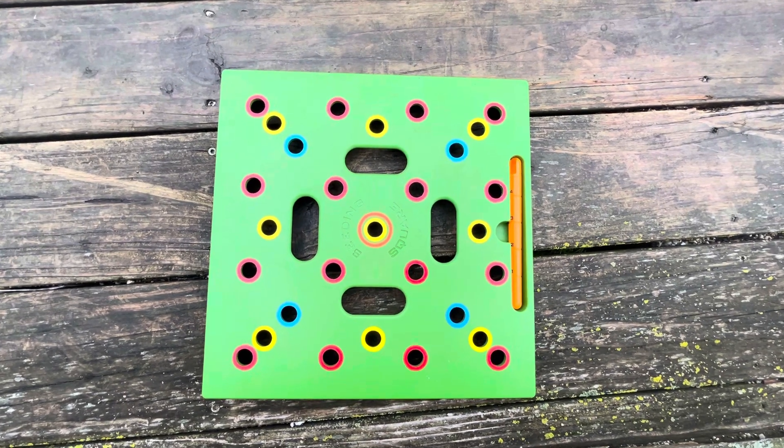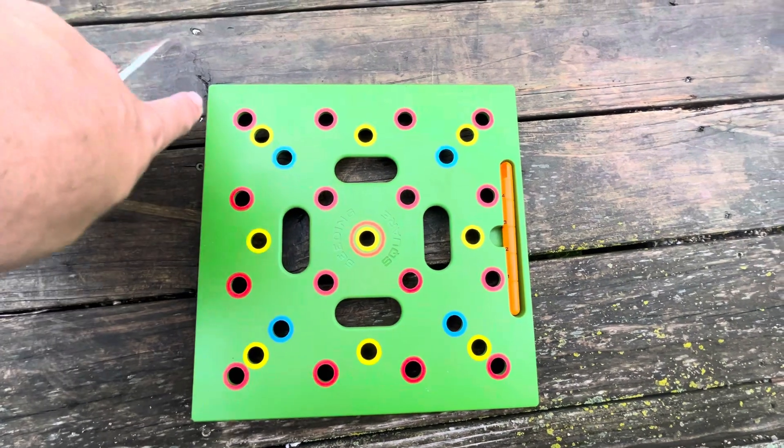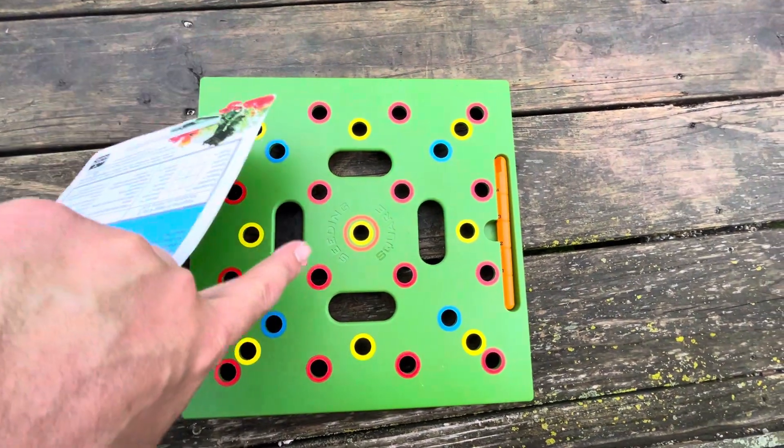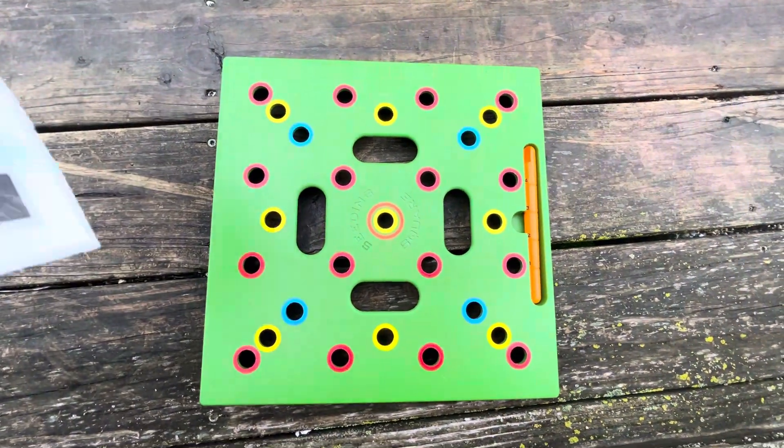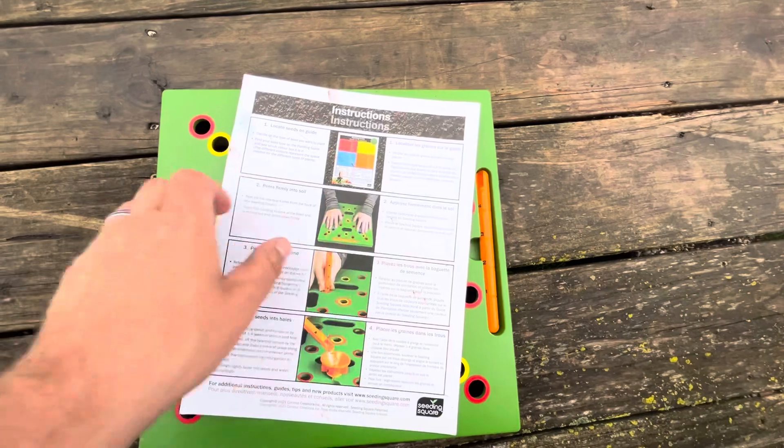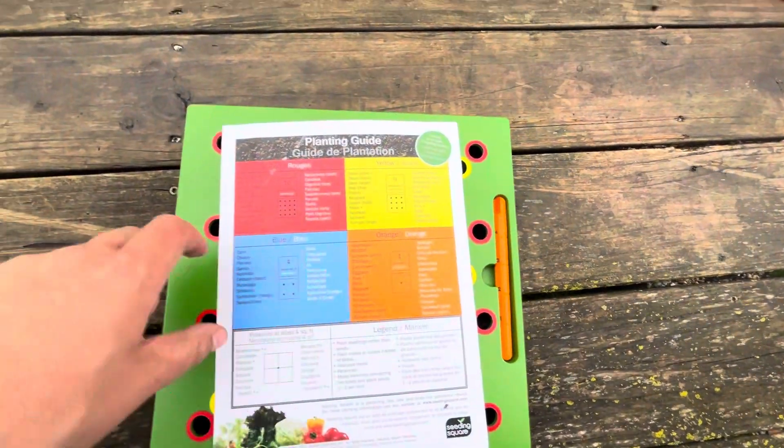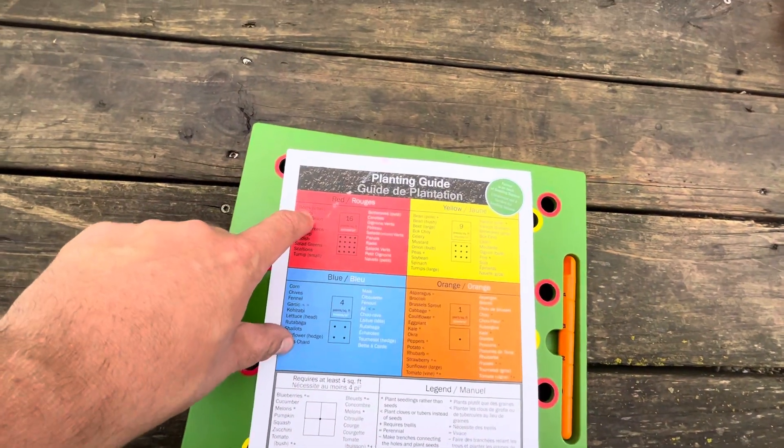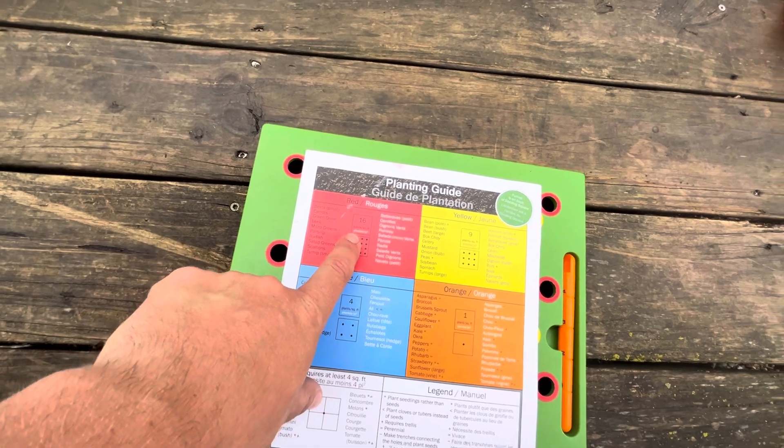The idea with square foot gardening is that the color pattern with the holes tells you the spacing. Depending on the plant, like beets, you can put 16 per square foot.